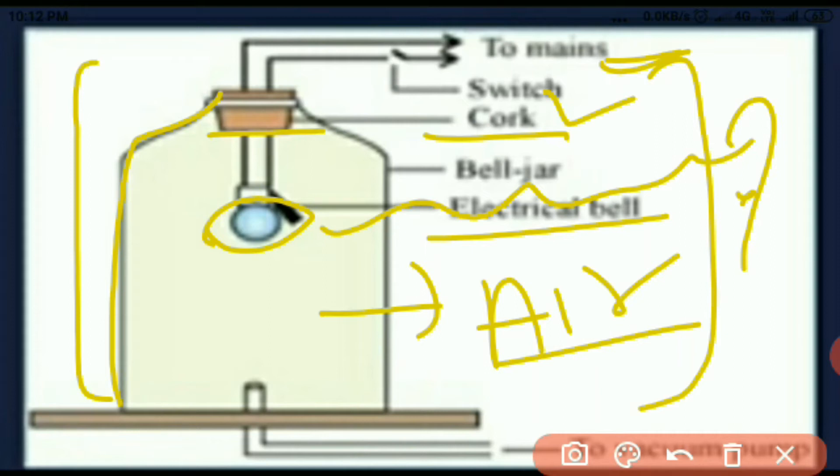Then we can open the cork switch and remove some air from outside. After we have removed some air from outside, we can press the main switch. Then the sound of the bell is faint.